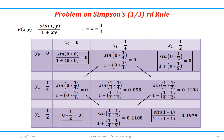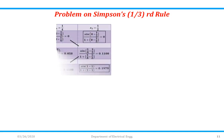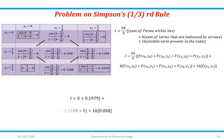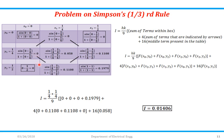We apply Simpson's one-third formula: I = hk/9 × [sum of terms within the box + 4 × sum of terms indicated by arrows + 16 × middle term]. The corner sum is 0 + 0 + 0.1979 + 0 = 0.1979. The arrow sum is 0 + 0.1108 + 0.1108 + 0.1108 + 0, multiplied by 4. The middle term contributes 16 × 0.058. Substituting all values, the answer comes out to be I = 0.0146.